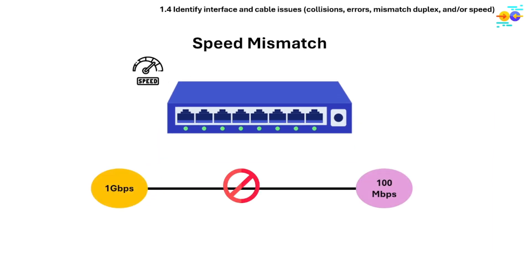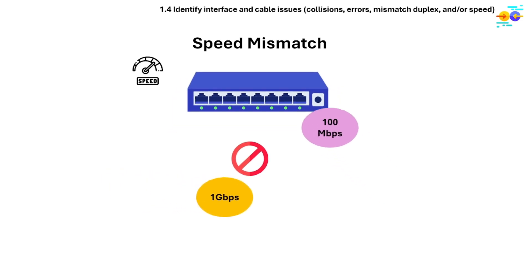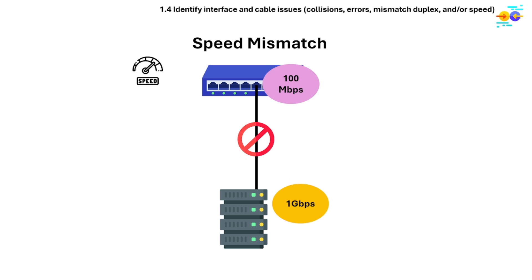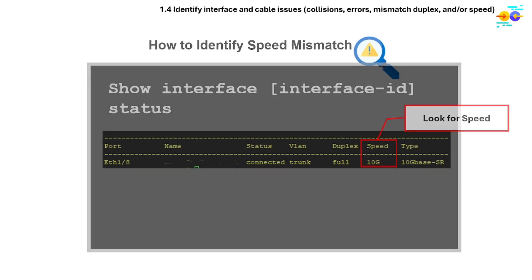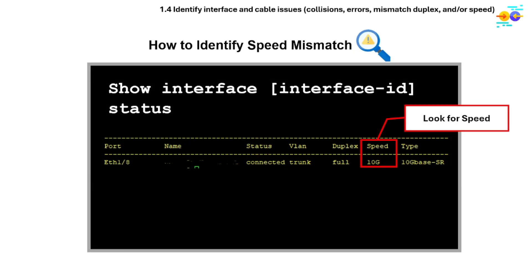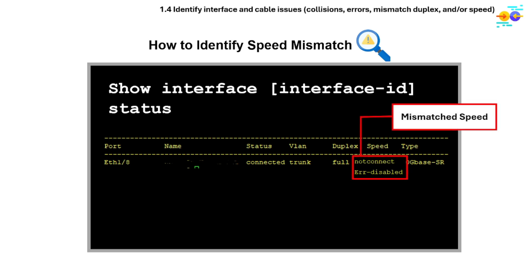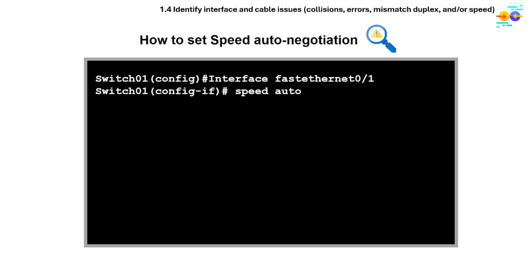This is how to set duplex auto-negotiation. Speed mismatch occurs when two devices on a link are set to different speeds, preventing proper communication — for example, an admin hard-sets a switch port to 100 Mbps while a connected server NIC negotiates 1 Gig. To identify speed mismatch, use the show interface [interface-id] status command and check the speed column. Mismatched speeds may show as not connected or error-disabled. Use auto-negotiation when possible; this is the command to set speed auto-negotiation.